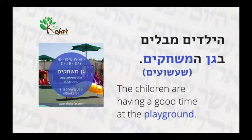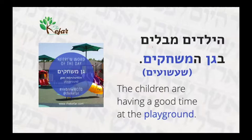So Hayeladim is a combination of Ha, which means 'the,' and Yeladim, which are 'children.' The verb Mevalim comes from the root Bet-Lamed-He, and Levalot means to have a good time or to enjoy yourself. Mevalim is present tense plural because we're talking about Yeladim, which are children.